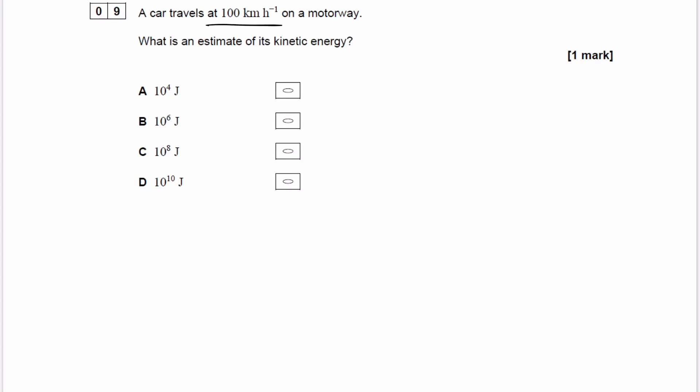So we have a car that's traveling at 100 kilometers per hour, so that's the speed. We want to estimate the kinetic energy, so then the equation for kinetic energy is half mv squared.